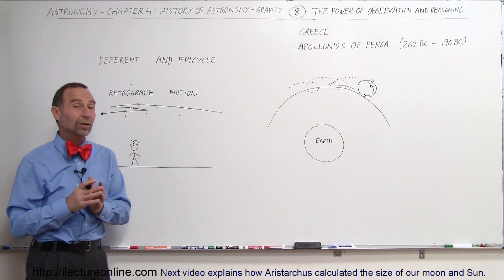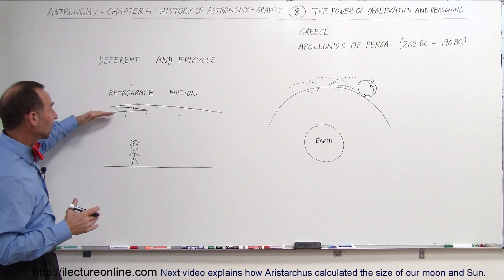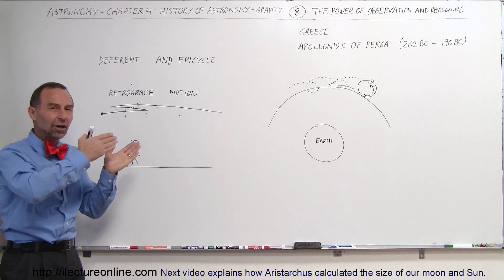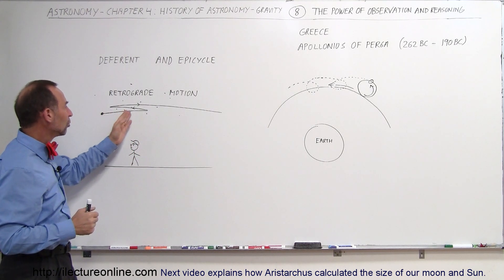There was this strange motion as well with the planets. Sometimes we would see planets moving one direction from night to night to night. Just like the stars throughout the year, they would move in different positions,